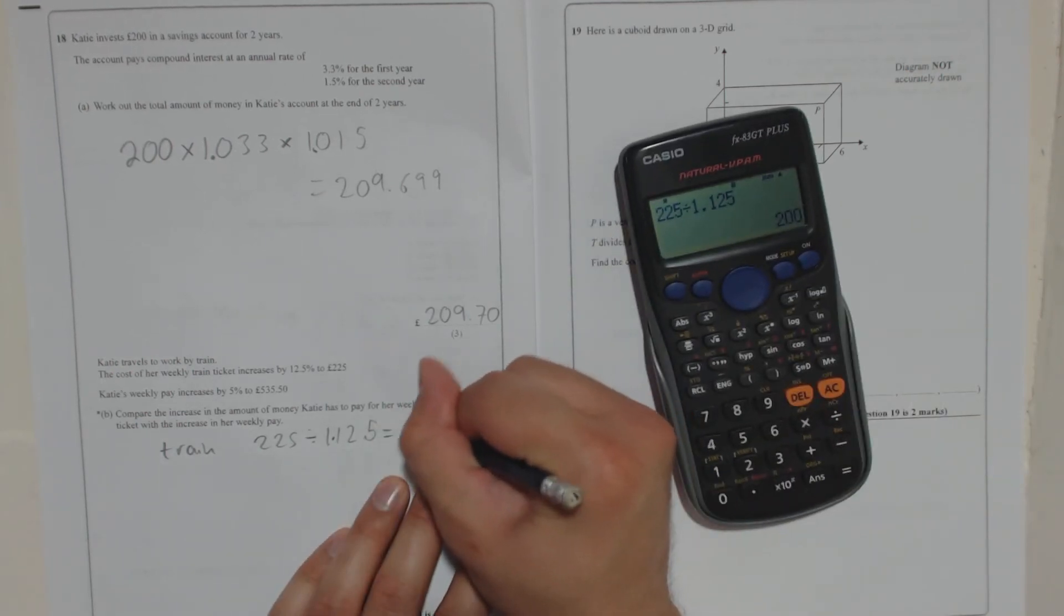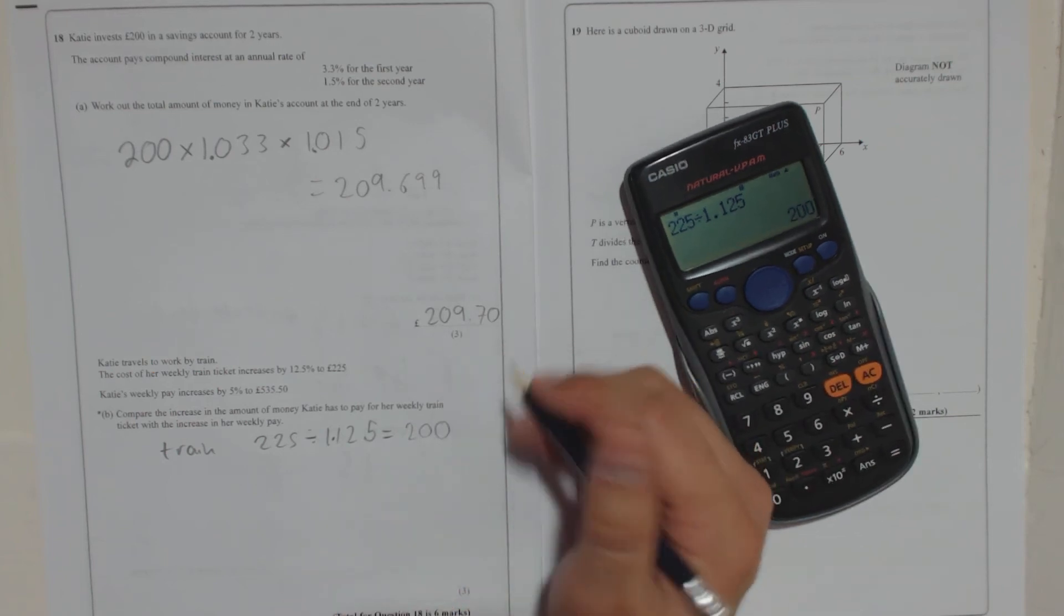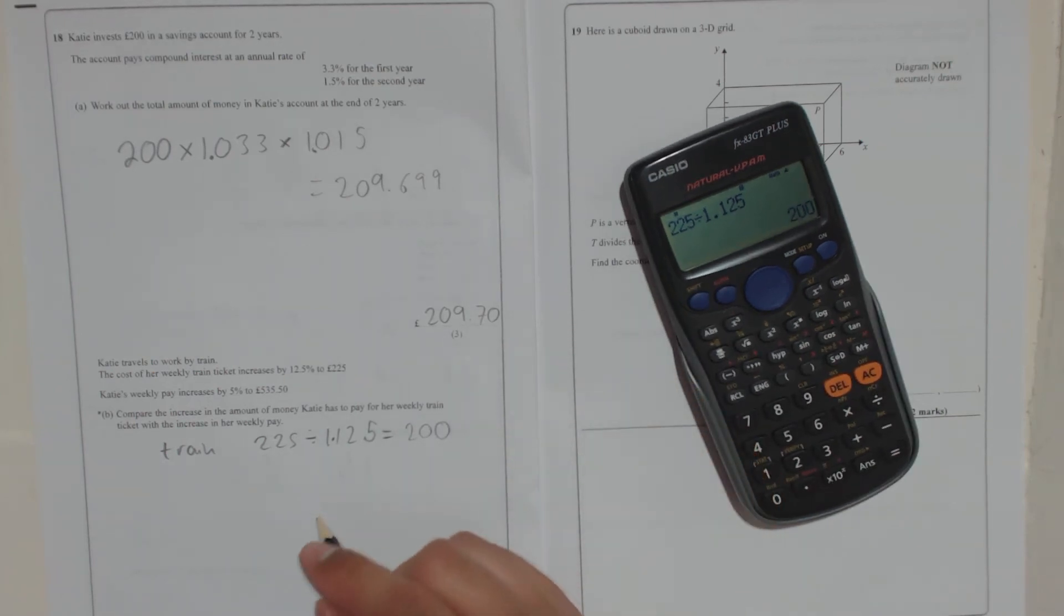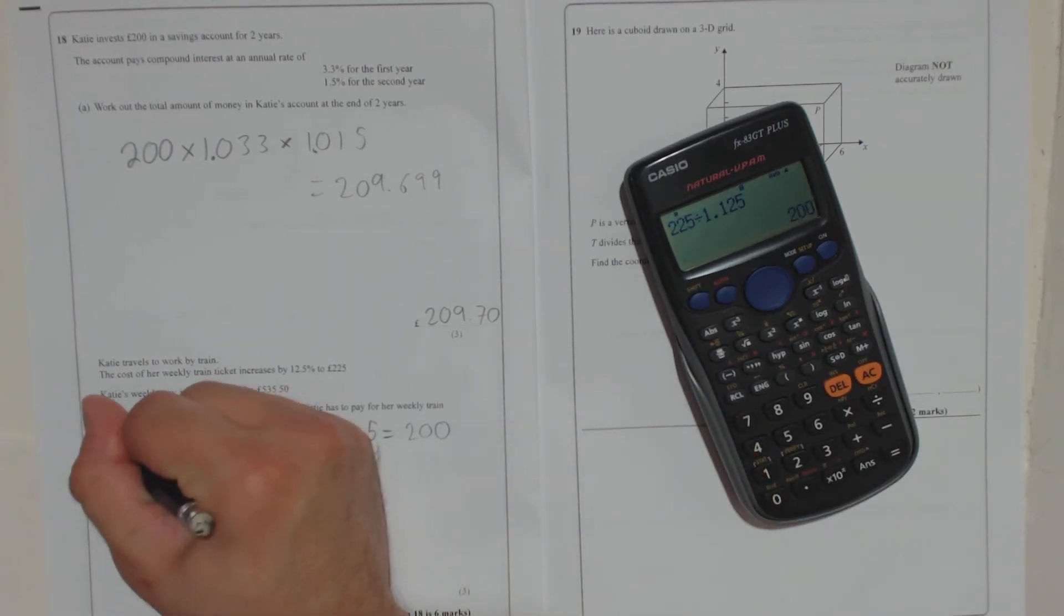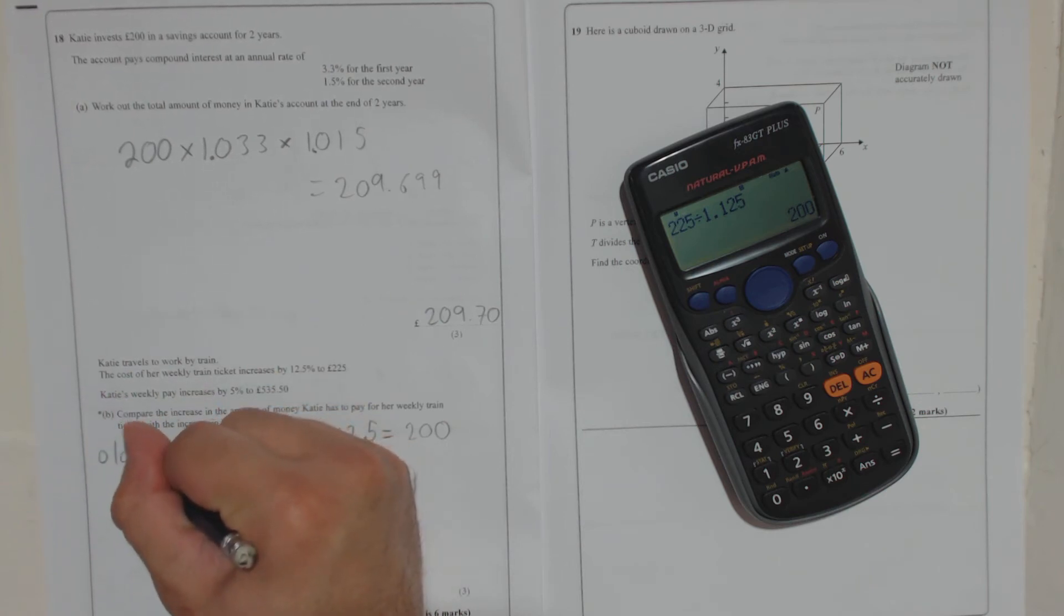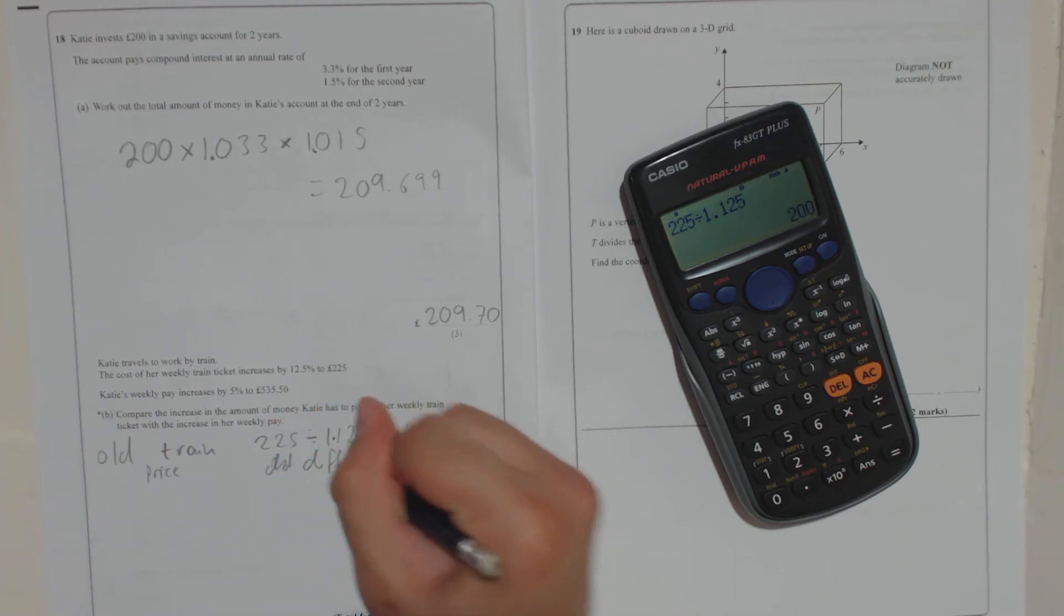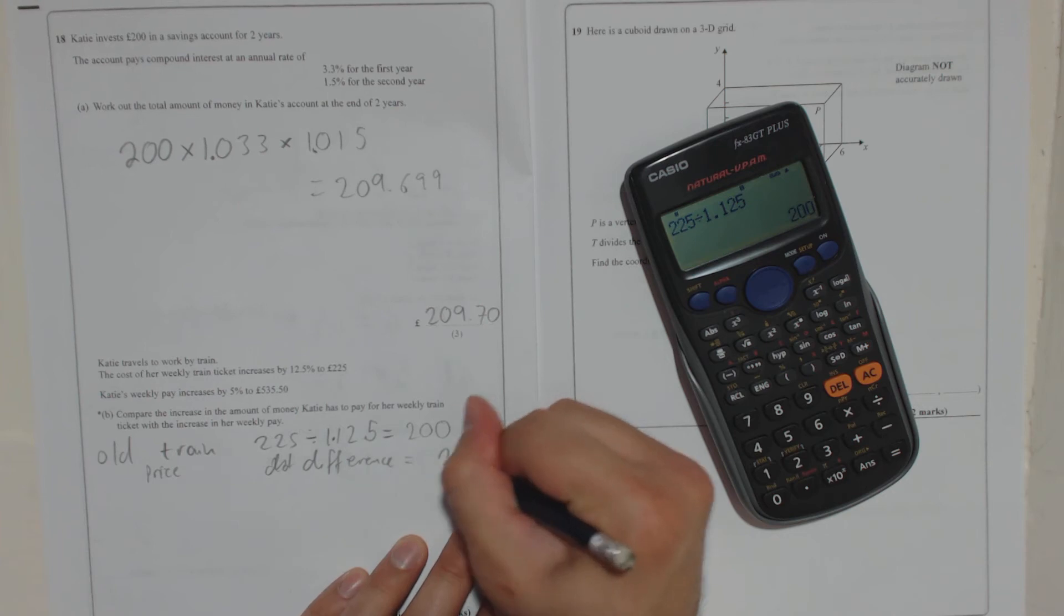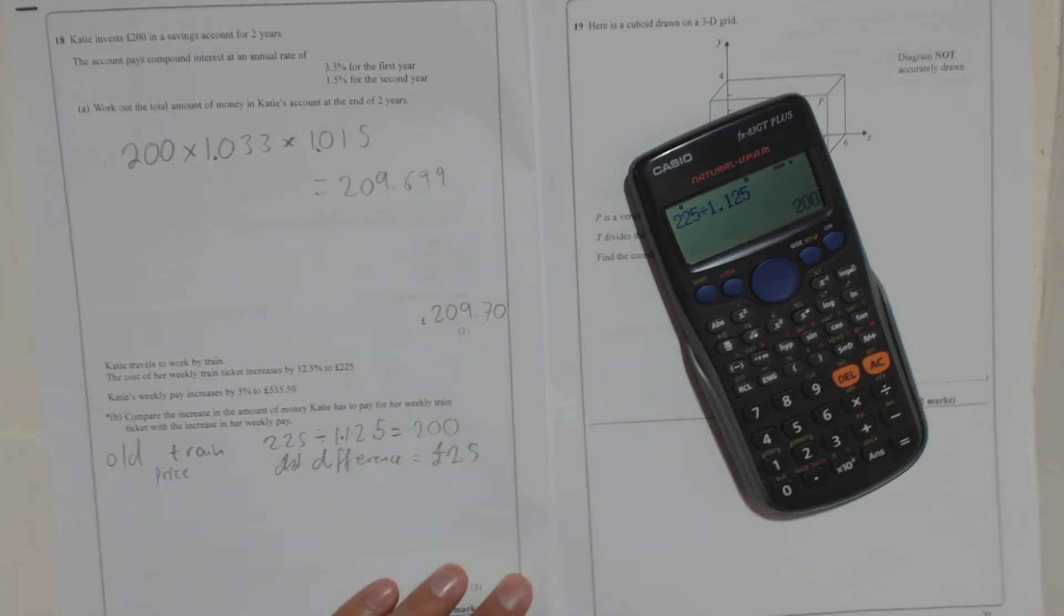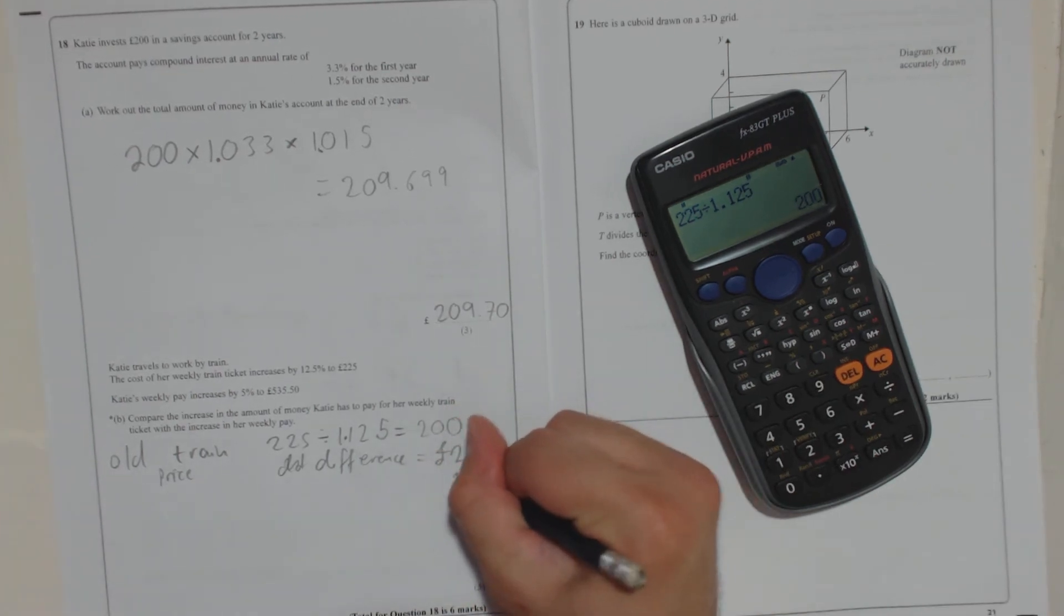So it was 200. Okay. So that means, so I'm going to write old train price difference equals 25 pounds more.